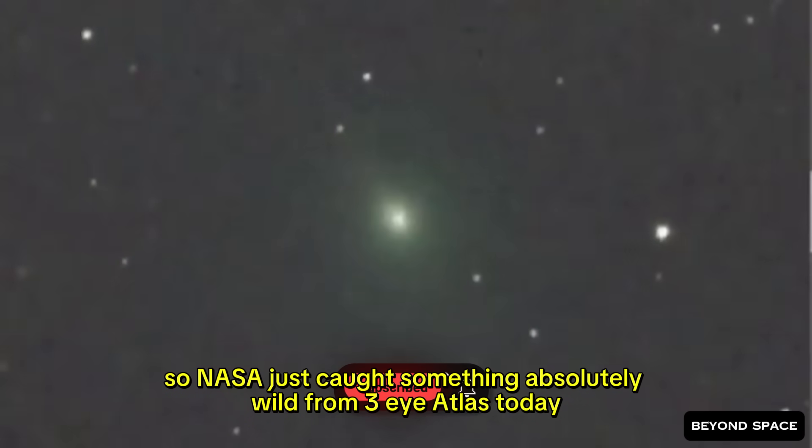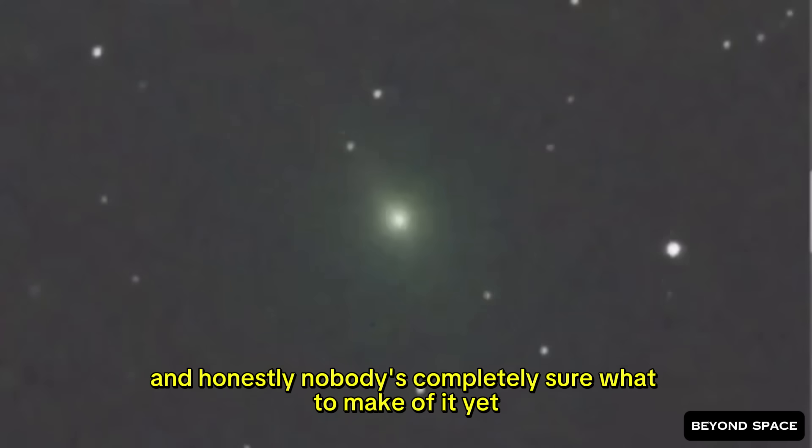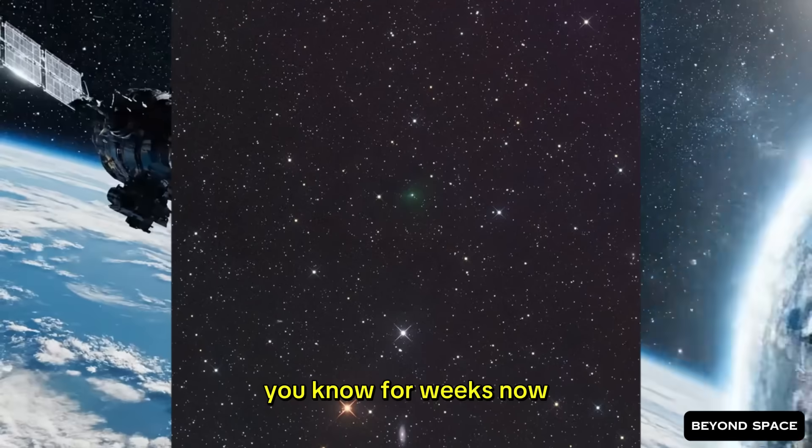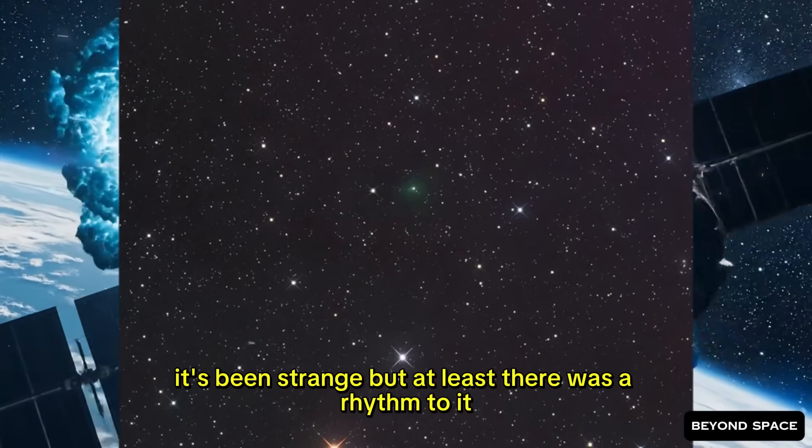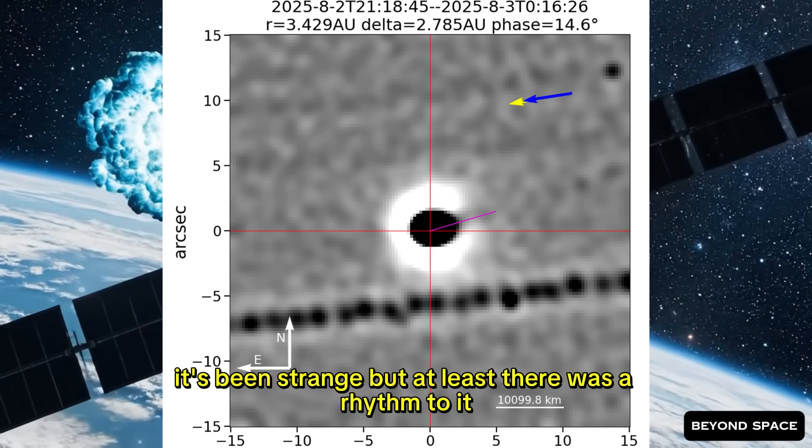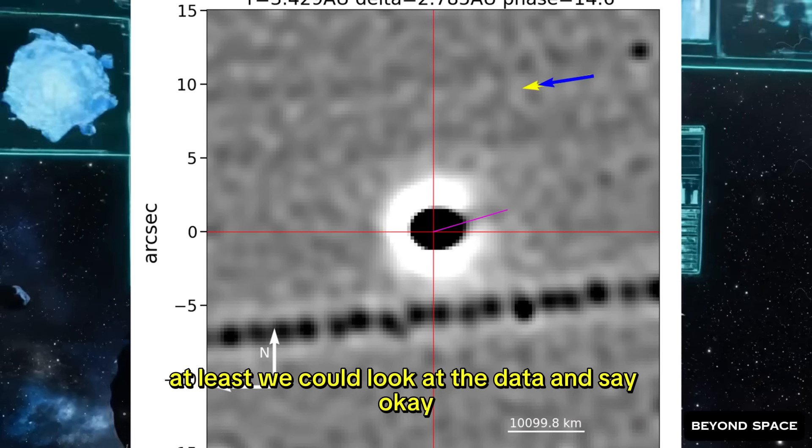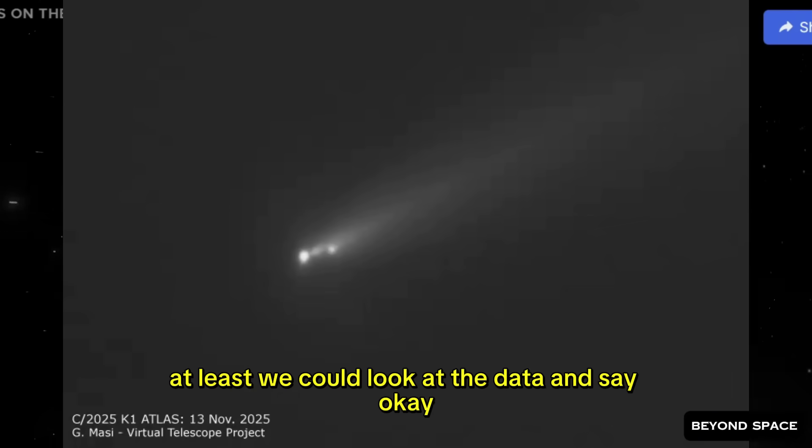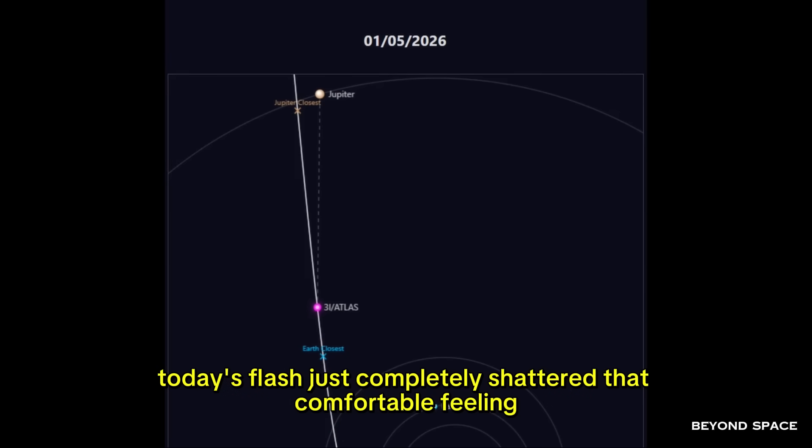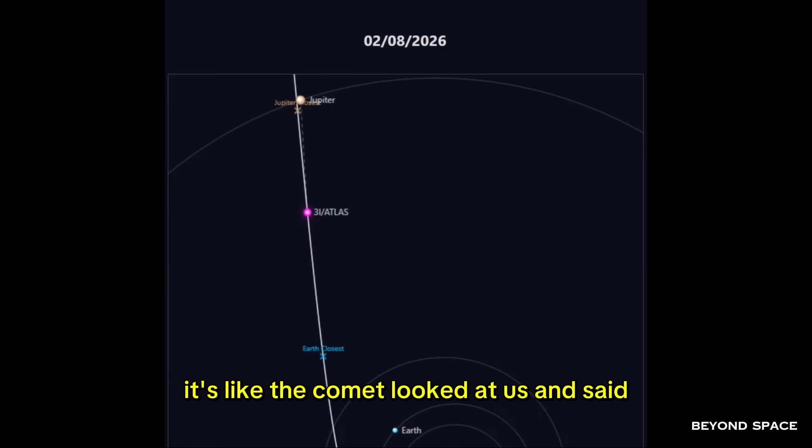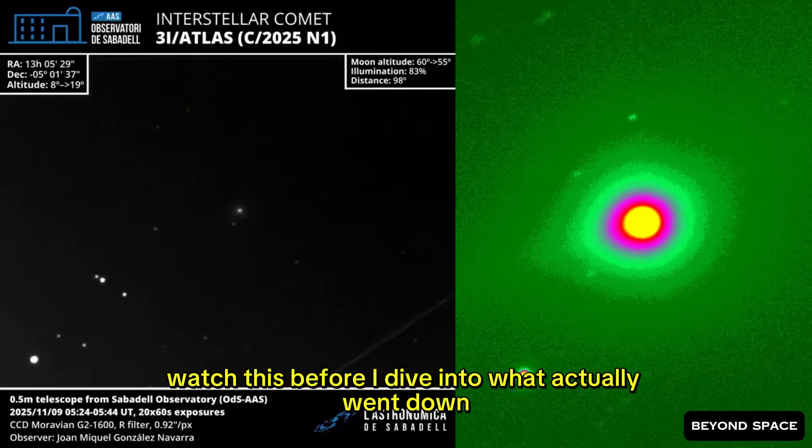So NASA just caught something absolutely wild from 3i Atlas today, and honestly, nobody's completely sure what to make of it yet. For weeks now we've all been watching this thing, and yeah, it's been strange, but at least there was a rhythm to it. At least we could look at the data and say, okay, we're seeing patterns here, we're getting a handle on this. Today's flash just completely shattered that comfortable feeling. It's like the comet looked at us and said, you thought you understood me. Watch this.